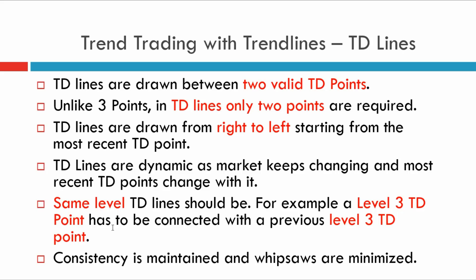The next rule for TD lines is that we need to have the same level of TD points. That means a level three TD point has to be connected with another level three TD point. There are some variations in some books where you can connect level three with level two or level one, but I strongly recommend maintaining this symmetry. The main advantage is that you will have consistency, and the number of whipsaws actually gets minimized to a great extent.